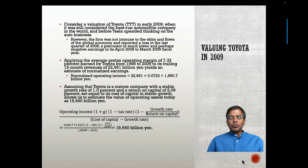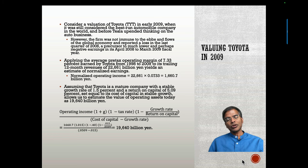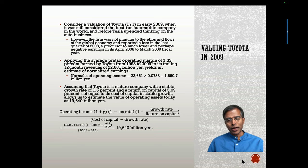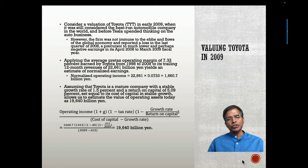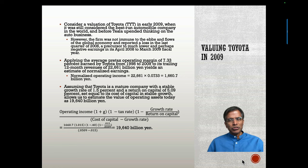Let's take an example. Suppose you were valuing Toyota in 2009. Toyota was widely regarded as the best-run automobile company in the world — this was pre-Tesla breaking through. But 2009 was an awful year; you're coming out of a crisis, and Toyota was not immune. It was actually losing money in 2009. So if I use the trailing 12-month numbers, Toyota looks like it should be worth nothing, which is not quite fair.